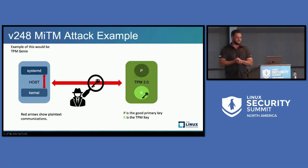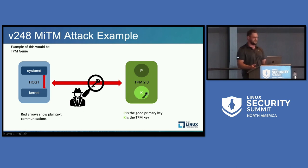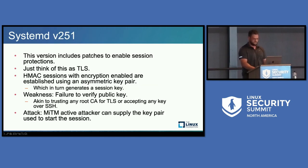Visually: in a plain text scenario, you have the key coming from the TPM, an attacker on the bus gets the key — they have your disk encryption key and can use it in an offline attack. Not particularly interesting, unless you're the attacker.